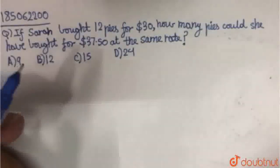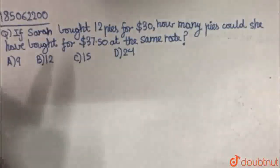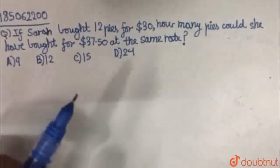If Sarah bought 12 pies for $30, how many pies could she have bought for $37.50 at the same rate?